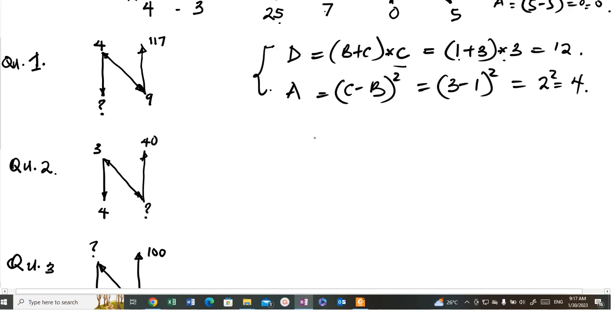We can now get your C. C, if you have A is equal to C minus B all squared. If you take the square root of each side, you have square root of A is equal to C minus B. And that implies that C is equal to the square root of A plus B.